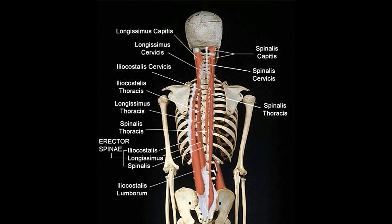Spinalis cervicis: this muscle arises from the lower ligamentum nuchae and the spinous processes of the 6th or 7th cervical vertebrae, and sometimes the 1st or 2nd thoracic vertebrae. It inserts into the spinous processes of the axis, or sometimes the 3rd or 4th cervical vertebrae. Spinalis capitis: this muscle arises from the spinous processes of the lower cervical vertebrae and upper thoracic vertebrae. The insertion points are between the superior and inferior nuchal lines of the occipital bone at the base of the skull.